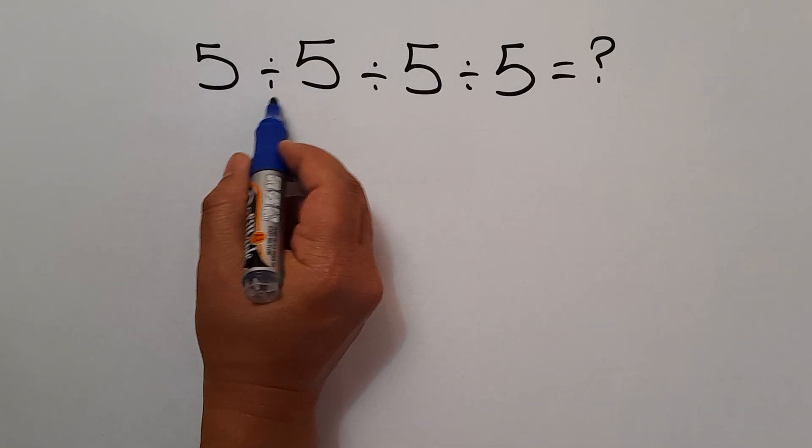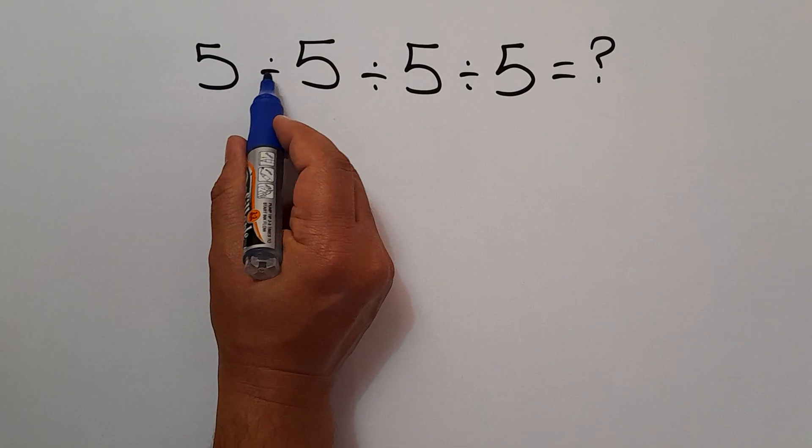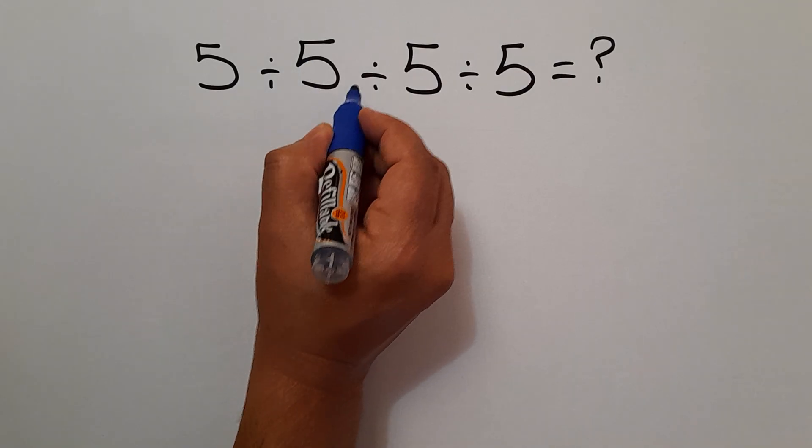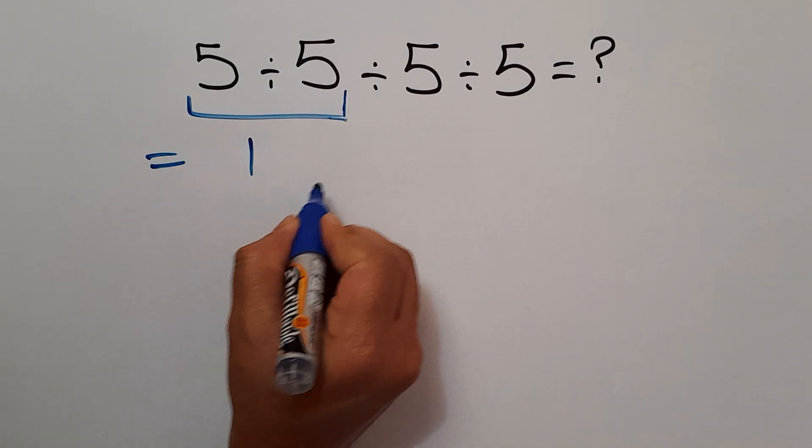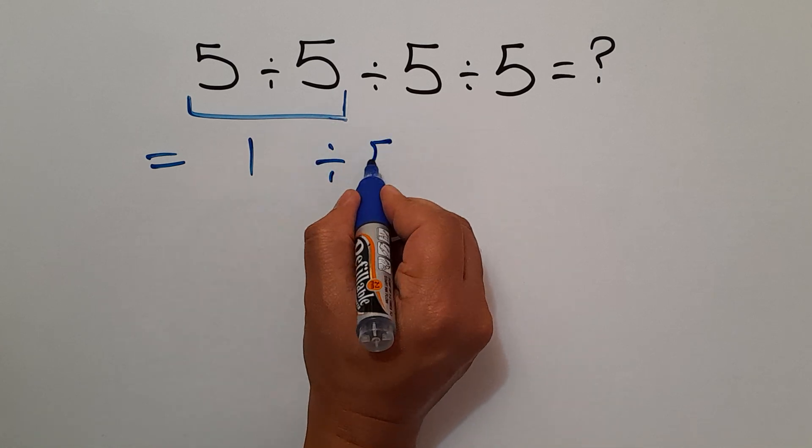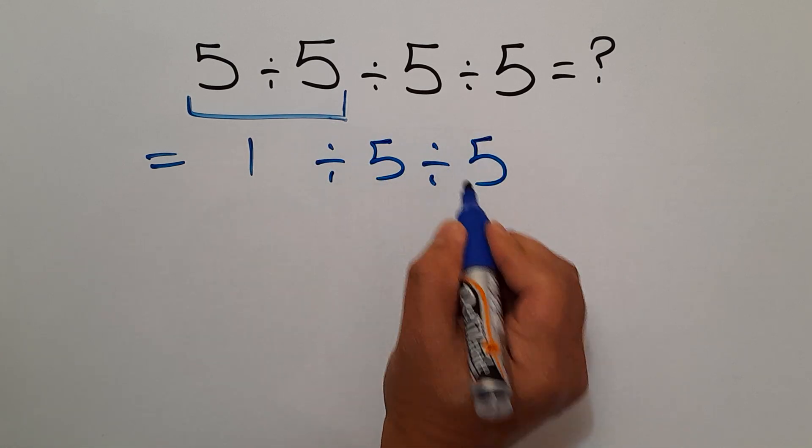So first, this division: 5 divided by 5 gives us 1. So 1 divided by 5 and divided by 5.